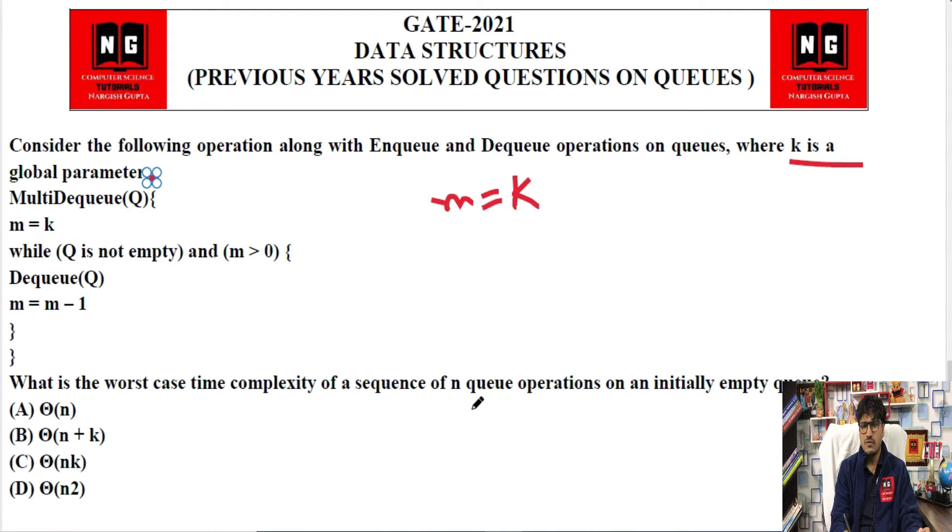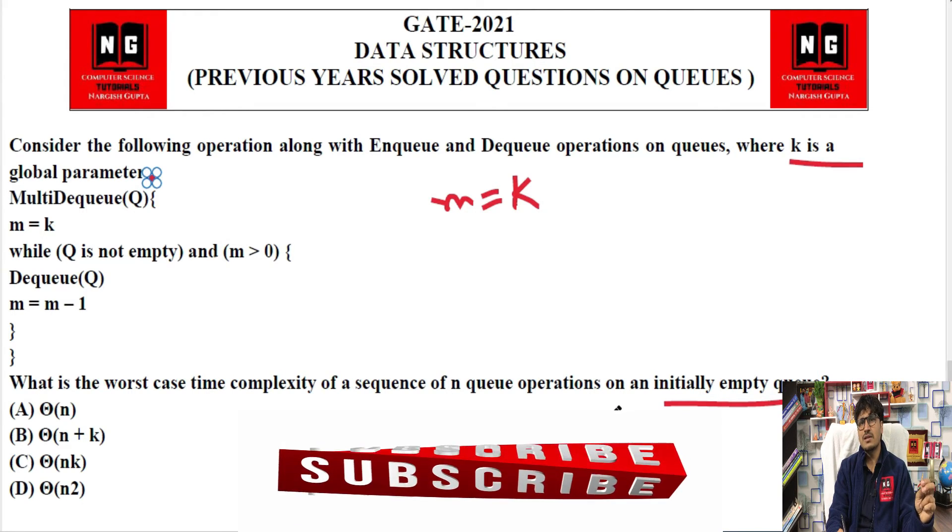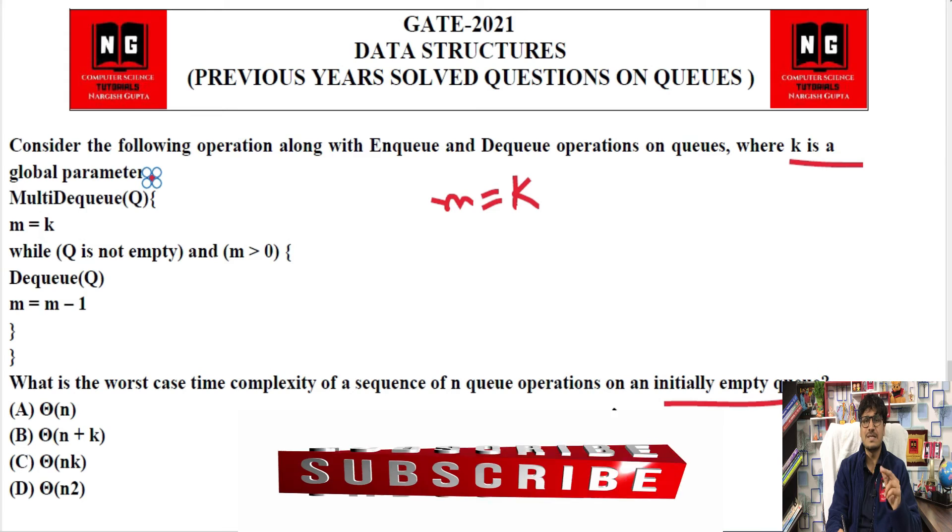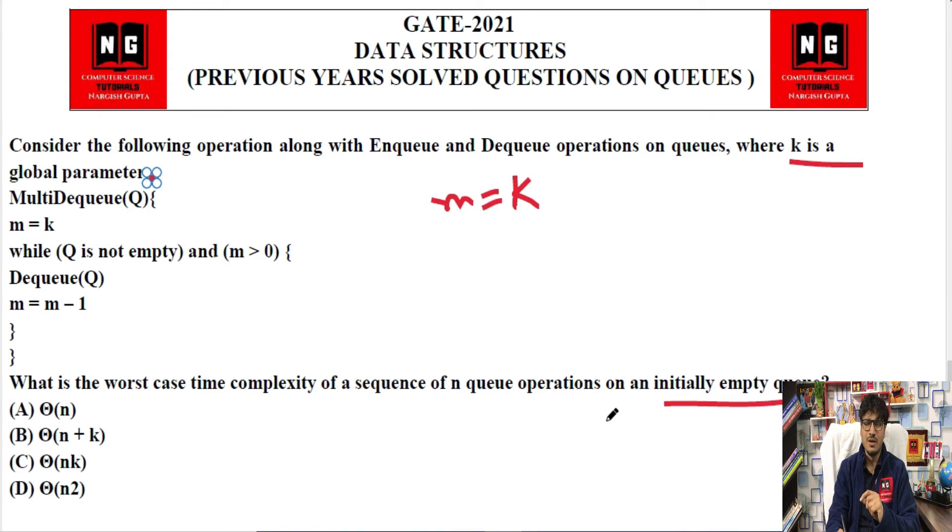What is the worst case time complexity of a sequence of n queue operations on an initially empty queue? Look, again and again I repeat that in gate exam, always the question should be read by you at least two times. Because one wrong question, if you do one less question, that will be okay, but if you do one wrong, that will be a problem. If this was in two marks, you got two marks wrong and 0.66 also wrong for negative marking, so 2.66 marks is your loss. So in this case don't do that. Read the question two times. If you read this question two times, you'll see it says: what is the worst case time complexity of a sequence of n queue operations on an initially empty queue? The queue is initially empty.